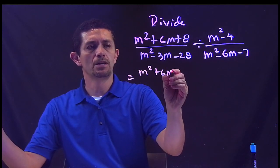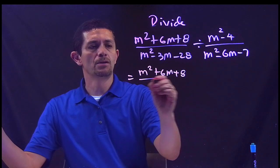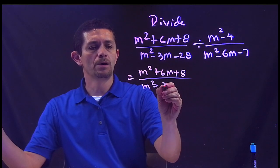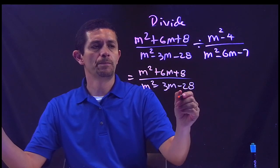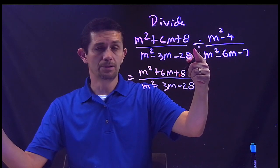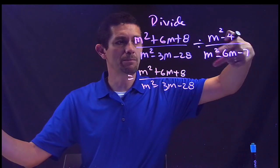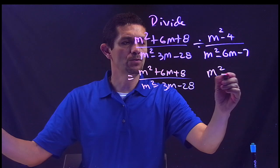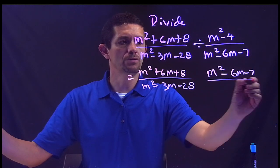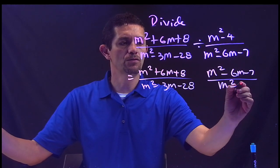And instead of the division it's gonna be multiplication, because I'm flipping the second fraction. M squared minus 6m goes to the top, m squared minus 4 goes to the bottom.